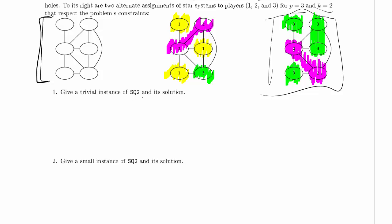We're supposed to give a trivial instance of SQ2 and its solution. Now last time we said you can't have an empty graph. Can you have an empty graph this time? Your givens are a graph, P and K. P is the number of players. K is the maximum number of star systems in a set of connected systems controlled by the same player. Does that require that there be any star systems? I think the answer is no. So here's a trivial instance. This is our graph right here. It's got nothing in it.